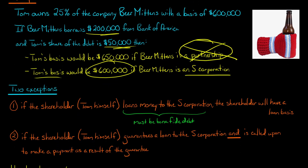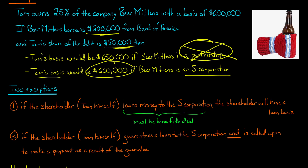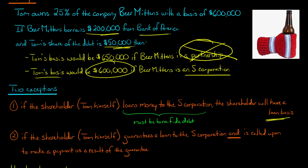The general rule is that corporate borrowings do not affect the shareholder's basis. However, if the shareholder — in this case, Tom himself — loans money to the S corporation, and this is a bona fide, actual loan where Tom is actually trying to get repayment, then the shareholder will have a loan basis. Tom would need to track his stock basis and his loan basis. This is the shareholder lending money to the S corporation, not the S corporation going out and borrowing money from Bank of America. In that case, the shareholder gets a loan basis.